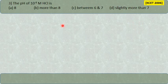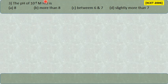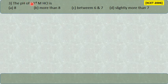Another tricky question from KCET 2016: calculate the pH of 10⁻⁸ molar HCl solution. This is a common mistake. Students write that since pH = −log[H⁺] and H⁺ concentration is 10⁻⁸, therefore pH = 8. But this is wrong.